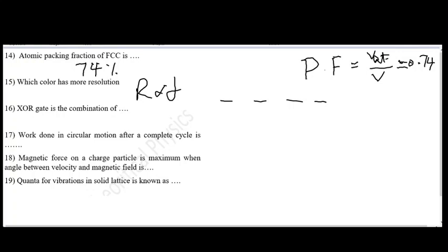In question number 16, exclusive OR gate constituents are asked. Boolean expression for output of exclusive OR gate can be written as a bar dot b plus a dot b bar. This is the output of exclusive OR gate.